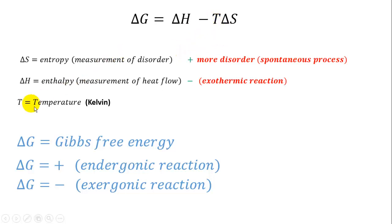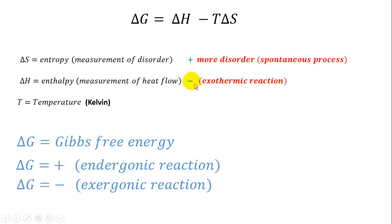Temperature also plays a role. You can have a reaction that's enthalpically favored — negative delta H for an exothermic reaction, liberating heat. You can have a reaction that's entropically favored, yielding more disorder. Temperature also favors the products. All three parameters contribute to the final judge of whether this reaction is going to go to the products — and that is delta G.